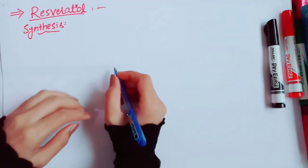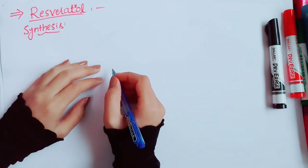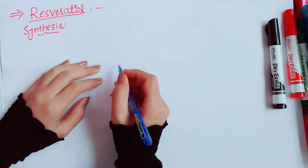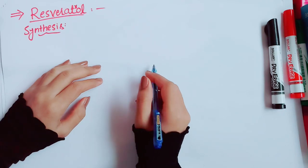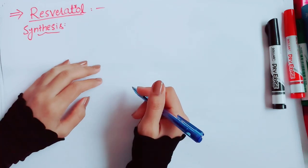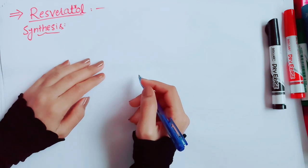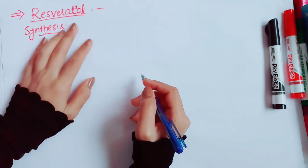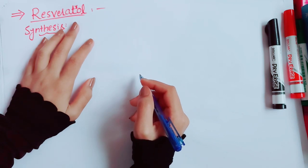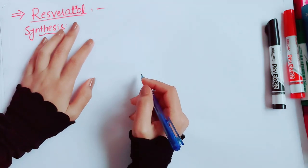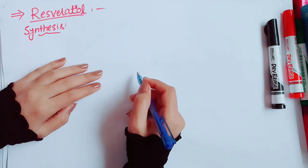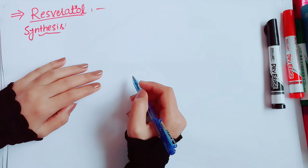Hi guys, welcome back to my channel. I am again with you with the fourth and last derivative of the phenolics, that is resveratrol. Watch this video to its full for better understanding of the step-by-step mechanism of its synthesis. First of all I will tell you about resveratrol — what it is and what are its health benefits. Resveratrol is a plant compound that acts like an antioxidant, and the top food sources include red wine, grapes, some berries, and peanuts.